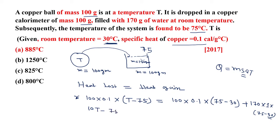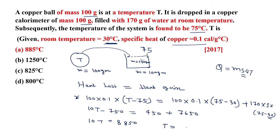Solving the equation: 10(t − 75) = 450 + 7650, which gives 10t − 750 = 8100, so 10t = 8850, therefore t = 885 degree centigrade. This is our answer.